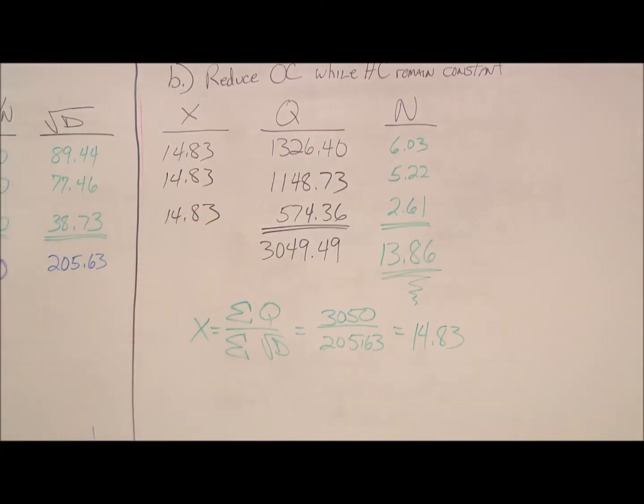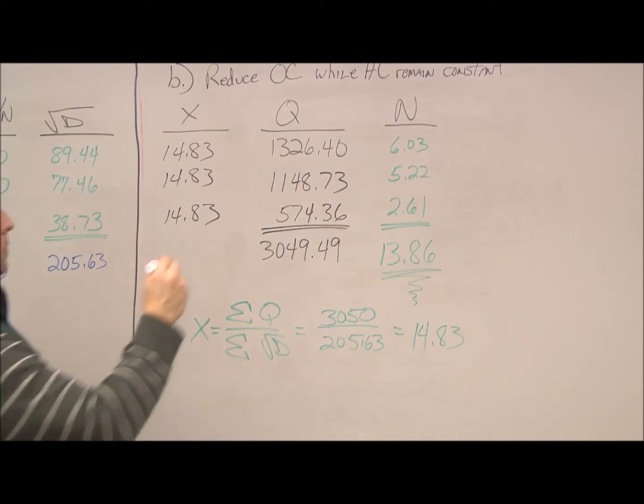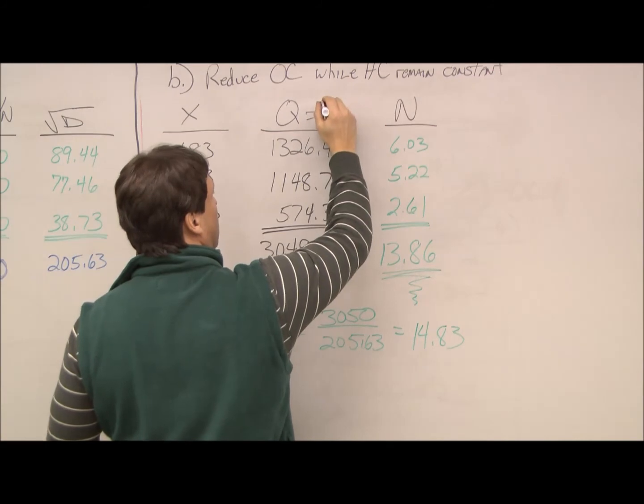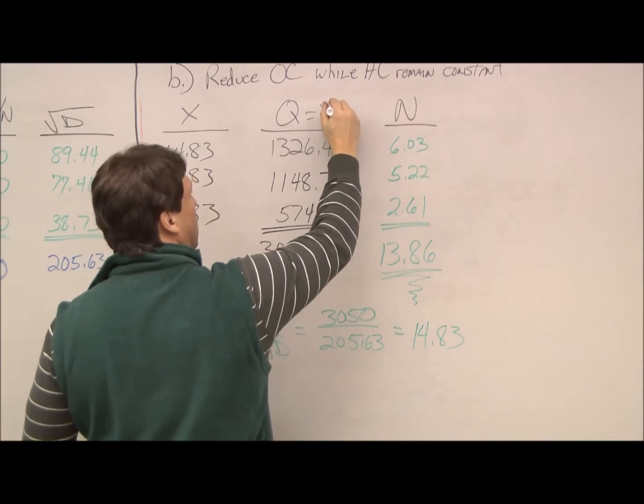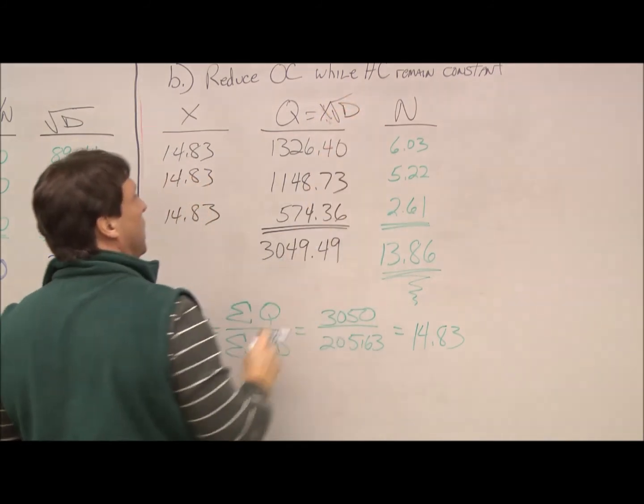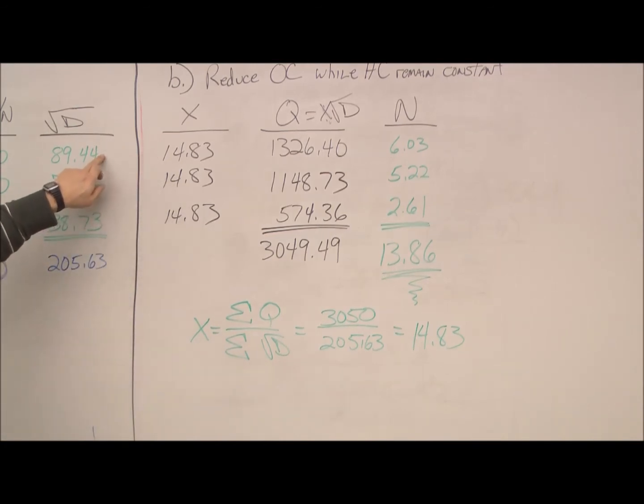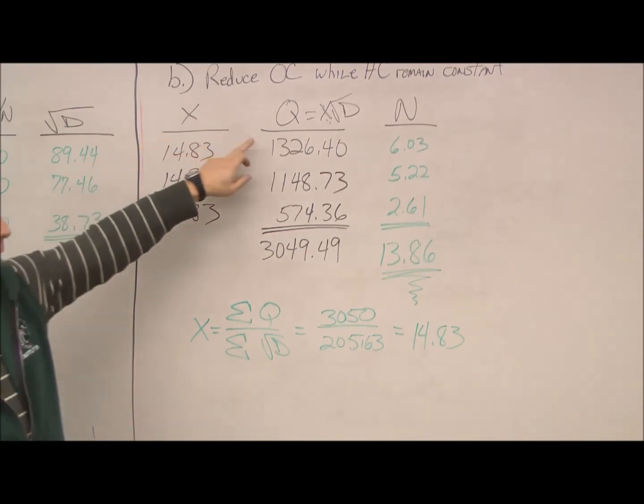And then we just go right on to figure out Q. We figure out X times the square root of D. So, we have our X here, we have the D, we multiply these two together, we get the 1326.40.